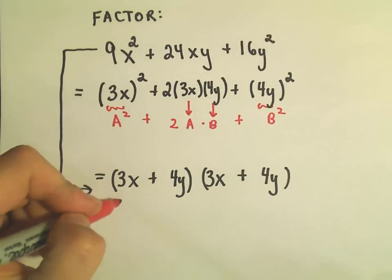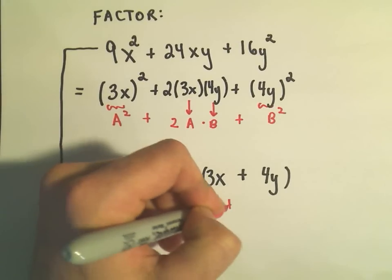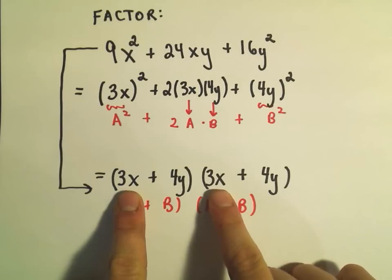Which again, this says we now have a plus b times a plus b, just like we did a second ago in our general formula. And again, if you multiply this out, you'll get 3x and 3x is 9x squared. We'll get 3x and 4y, which is 12xy.